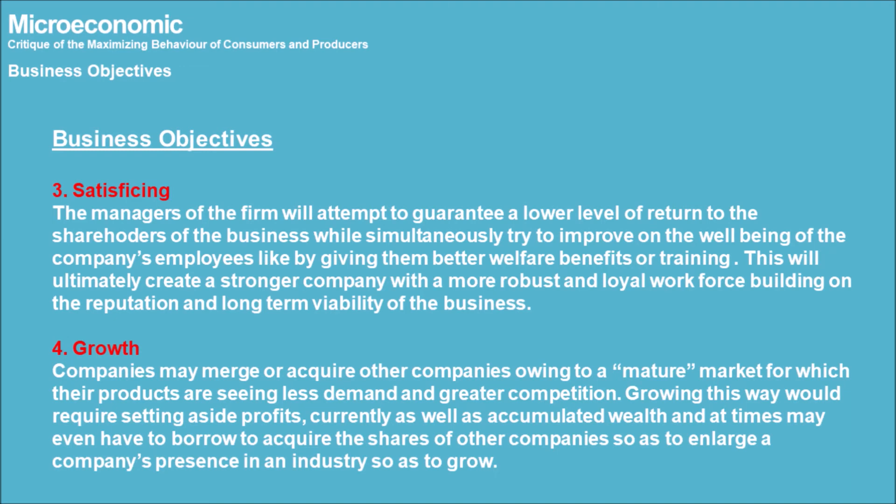Alternative Objective 3: Satisficing. The managers of the firm will attempt to guarantee a lower level of return to shareholders while simultaneously trying to improve the well-being of the company's employees — for example, by giving them better welfare benefits or training. This ultimately creates a stronger company with a more robust and loyal workforce, building on the reputation and long-term viability of the business.